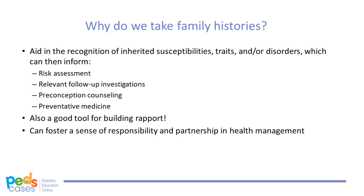A complete family history can assist in preconception counseling, which has the goal of reducing chances of poor perinatal outcomes by addressing risks prior to pregnancy. If we can identify genetic risk factors, couples can be referred for genetic counseling, where they may undergo carrier testing, helping them make informed decisions about future pregnancies. If we suspect that Billy has a genetic condition, it could have implications not only for any children he might have, but for his siblings, potential future siblings, and other family members who may carry the same gene. A family history can also help guide next steps after a diagnosis of a genetic condition.